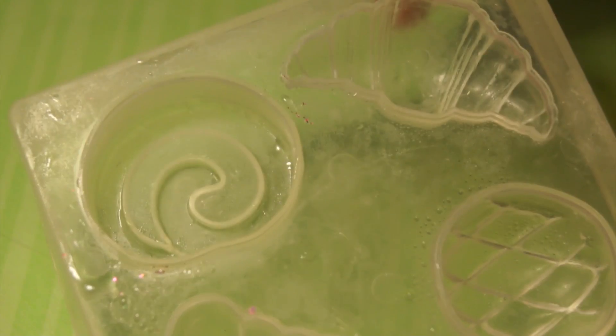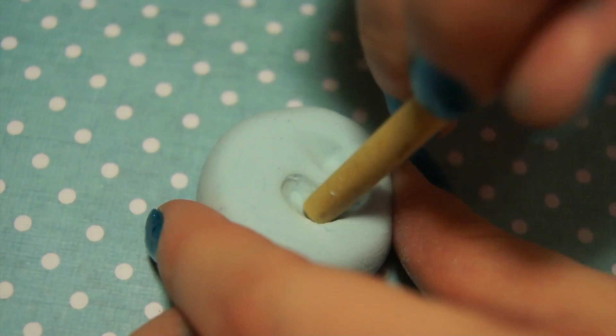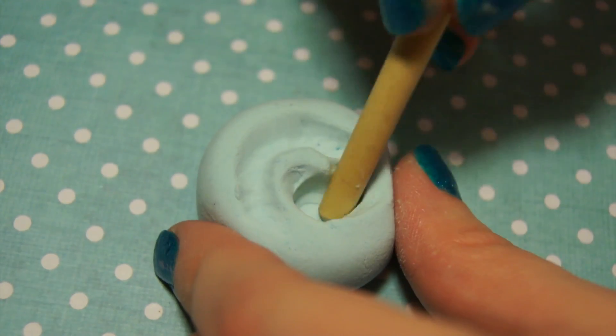I'm going to be using this mold by Padico and I'll put the link down below where you can buy it. If you don't have the mold, all you need to do is make a flattened ball and then using a ball tool or the back of a paintbrush or something rounded, just push a spiral shape into the clay.